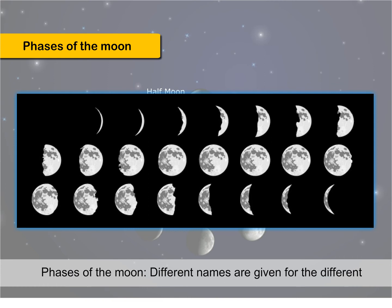Phases of the moon. Different names are given for the different phases of the moon: New moon, Waxing crescent, Waxing first quarter, Waxing gibbous, Full moon, Waning gibbous, Last quarter, Waning crescent, New moon.